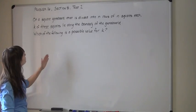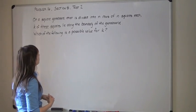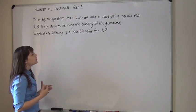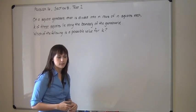The problem reads: on a square game board that is divided into n rows of n squares each, k of these squares lie along the boundary of the game board. Which of the following is a possible value for k? And then lists 5 numerical answers.